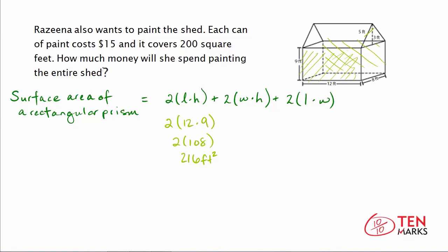Next, we add 2 times the width times the height. The width is 8 feet and the height is 9 feet, so 2 times 8 times 9 equals 144 feet squared. Adding this to the previous value covers the two side walls of the rectangular prism.